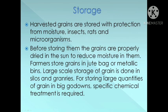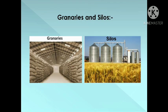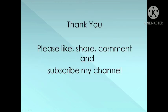Storage: This is the last step in crop production. Harvested grains are stored with protection from moisture, insects, rats, and microorganisms. Before storing, the grains are properly dried in the sun to reduce moisture. Farmers store grains in jute bags or metallic bins. Large-scale storage of grain is done in silos and granaries. For storing large quantities of grain, specific chemical treatment is required. Here you can see the pictures of granaries and silos, which are used to store large quantities of grain.